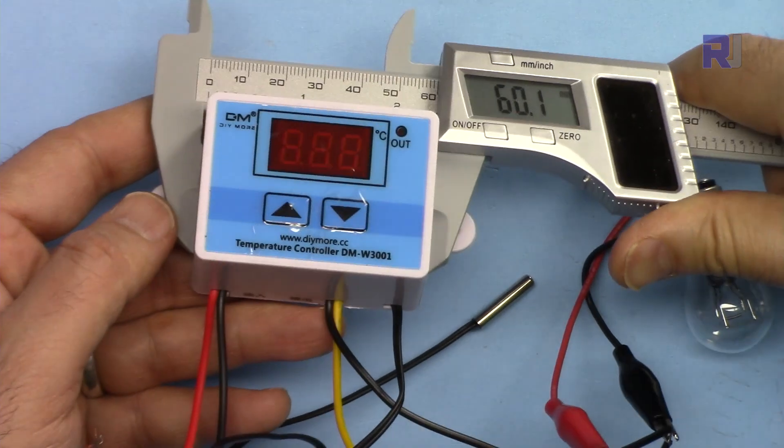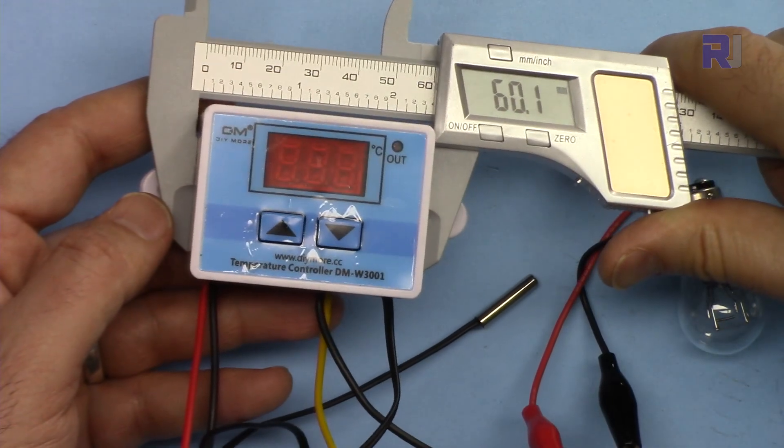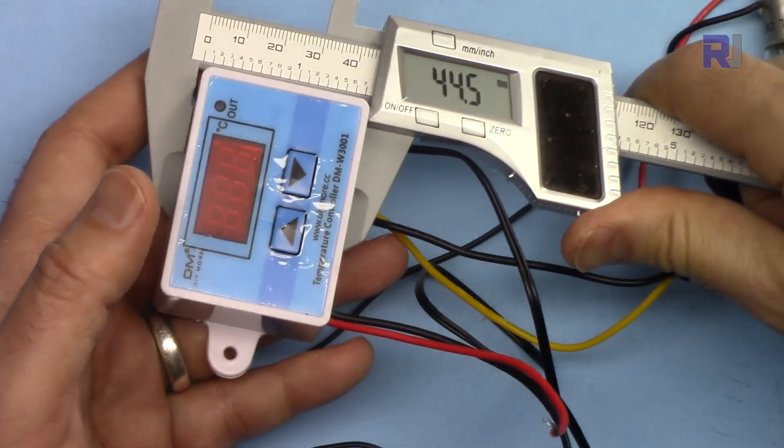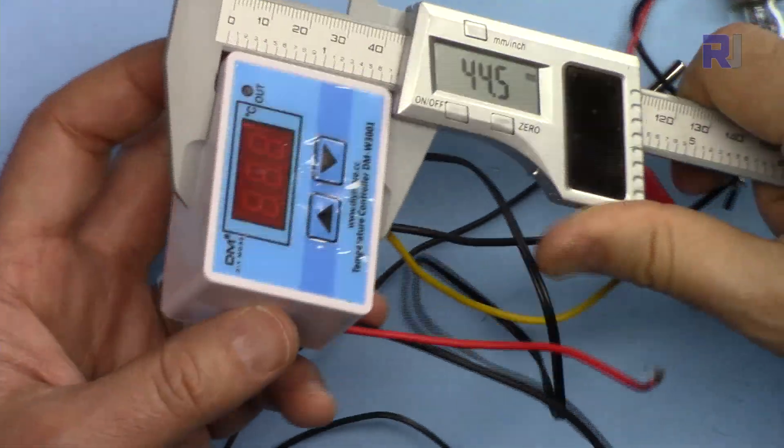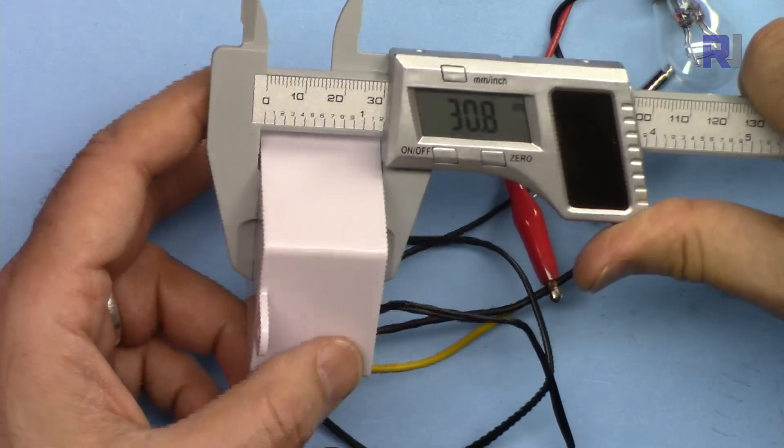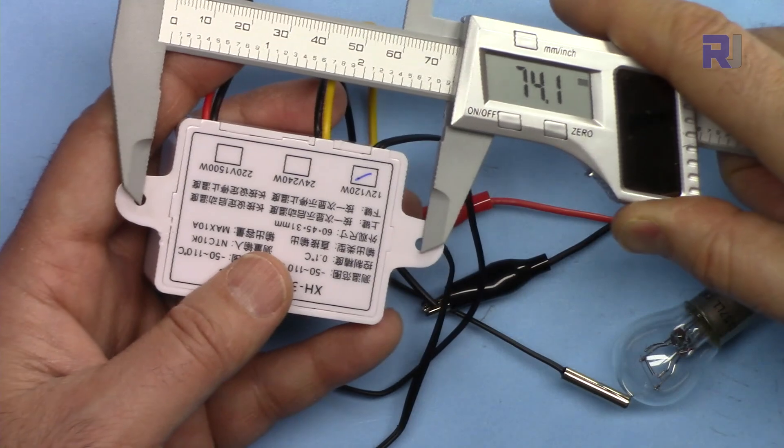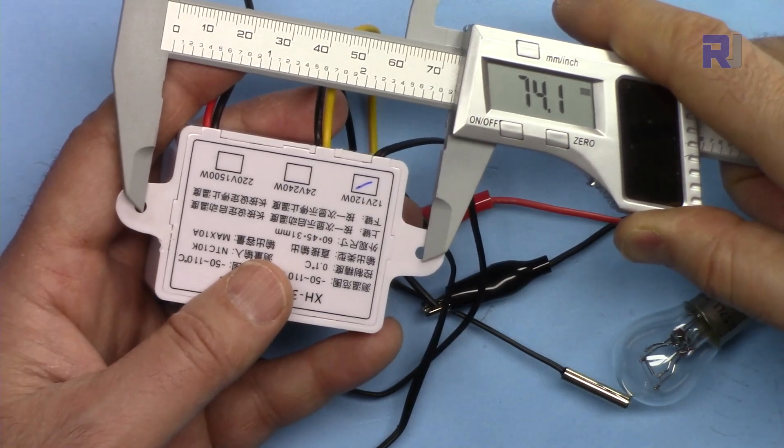The length of this is 60 millimeters, 60.1 millimeters, and the width is 44.5 millimeters. The depth is 30.8 millimeters. The exact distance of screw holes are 74.1 millimeters.